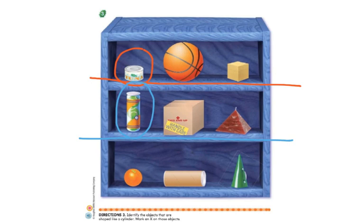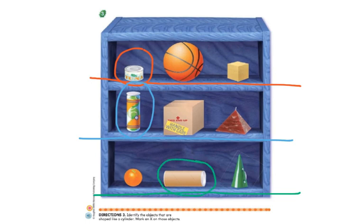Last row, down at the bottom. The first shape looks like an orange — is an orange a cylinder? What shape is an orange? A sphere. In the middle, we have what looks like a tube. Sometimes you'll see bagels, cinnamon rolls, or juice inside these kinds of cans. Is this a cylinder? It's on its side, but it still has two flat surfaces and a curve. This is a cylinder. Our last shape looks like a cone with a handle, and we know that's not a cylinder either.